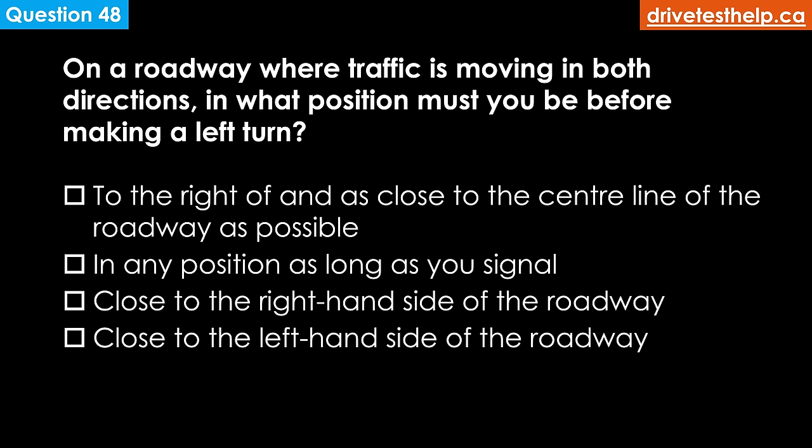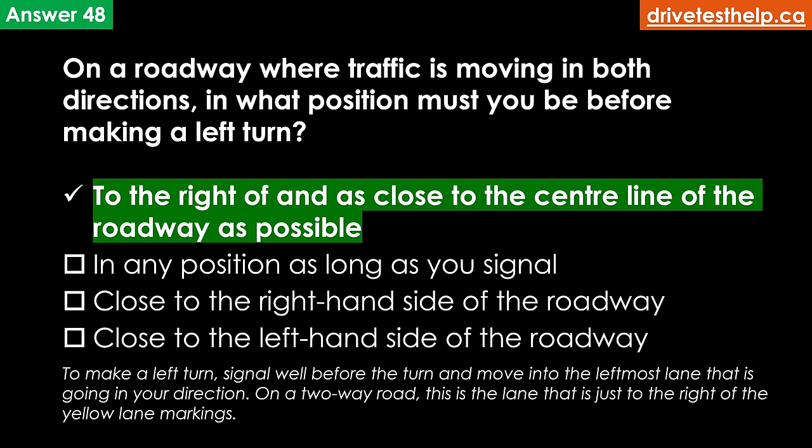On a roadway where traffic is moving in both directions, in what position must you be before making a left turn? Options: to the right of and as close to the center line as possible; in any position as long as you signal; close to the right-hand side; close to the left-hand side. The correct answer is to the right of and as close to the center line of the roadway as possible. To make a left turn, signal well before the turn and move into the leftmost lane going in your direction. On a two-way road, this is the lane just to the right of the yellow lane markings.